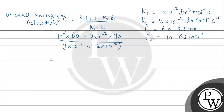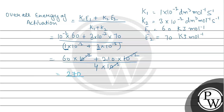This gives us 60 x 10 raised to power minus 2 plus 210 x 10 raised to power minus 2 in the numerator. The denominator is common, so the 10 raised to power minus 2 cancels. 1 plus 3 is 4 in the denominator. So we have 210 plus 60 = 270 divided by 4, which equals 67.5 kJ per mole.